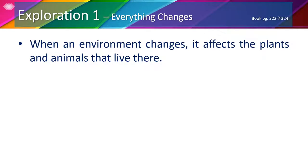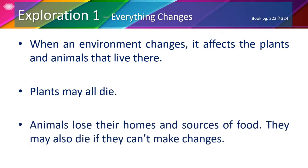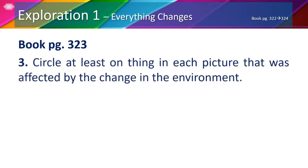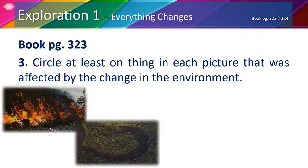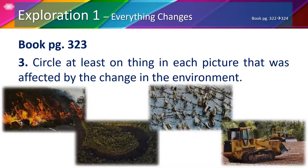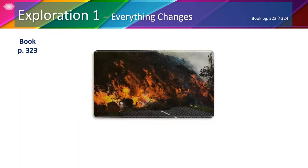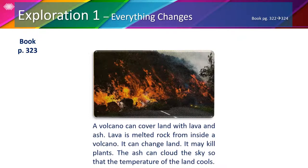When an environment changes, it affects the plants and animals that live there. Plants may all die. Animals lose their homes and sources of food. They may also die if they can't make changes. On page 323, number 3, we're going to circle at least one thing that was affected by the change in the environment. In the first picture, we can see the effect of a volcanic eruption. A volcano can cover land with lava and ash. Lava is melted rock from inside a volcano — it can change land and may kill plants. The ash can cloud the sky so that the temperature of the land cools.